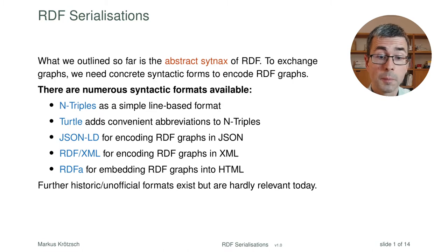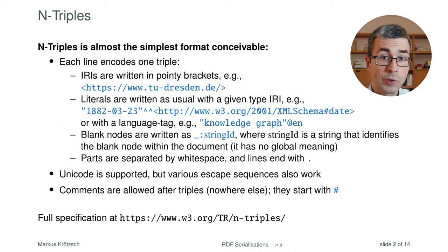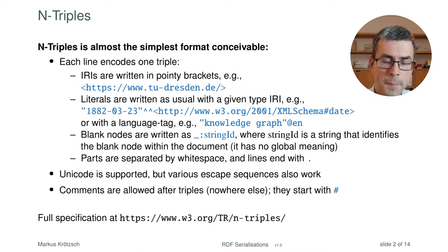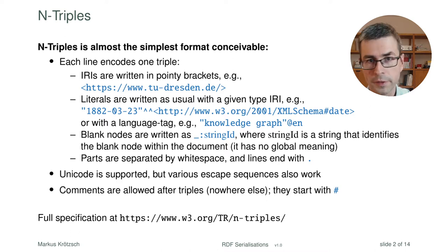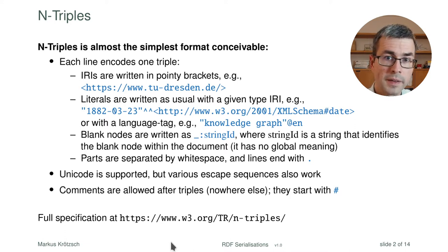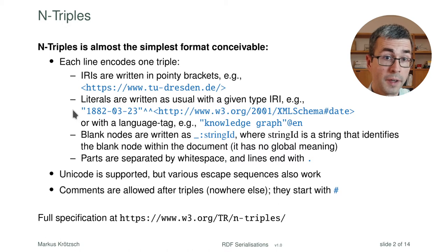Let's start with the simplest of these: N-Triples. N-Triples format is really the most straightforward way of writing an RDF graph syntactically. We take the RDF graph, which is already a set of triples, and we write down these triples in a list, line by line — one line is one triple. The three parts of the triple — subject, predicate, object — simply become three components of the line separated by whitespace. When we write an IRI, we put it into pointy brackets. When we write literals, we write them with IRIs in pointy brackets, or if they are language-tagged strings, with a language tag and an at-sign.